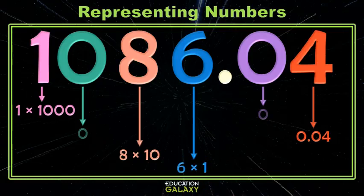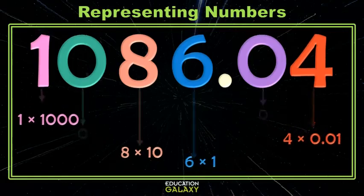And then we have a 4 in the hundredths. And we're going to write that as 4 times 100. No problem, right? Then to write it in its expanded notation, we'll write it as a sum.